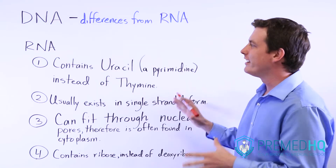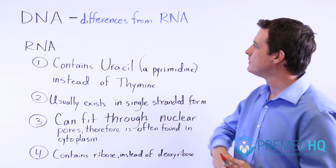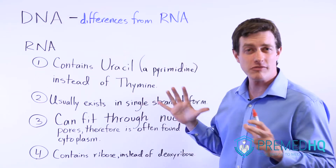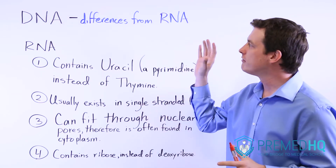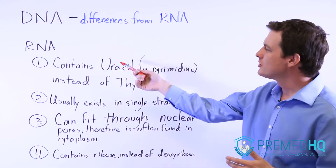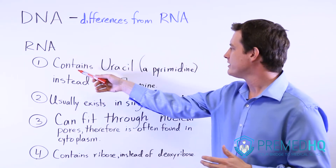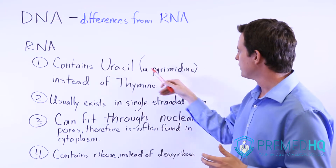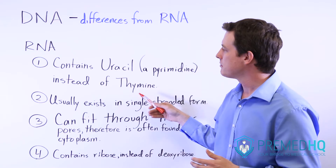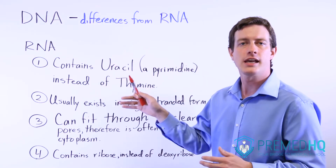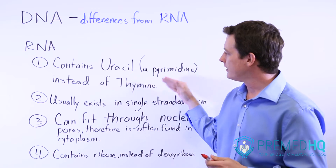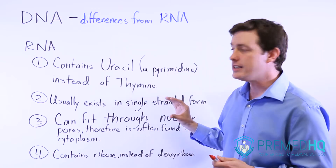DNA and RNA are the two types of nucleic acids that you're most likely to encounter. In a lot of ways they're very similar, but there are a few differences you should be aware of. The first is that RNA contains uracil, which is a pyrimidine, in place of thymine. So the U binds with A in RNA, whereas thymine and adenine are what bind in DNA.